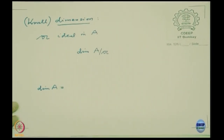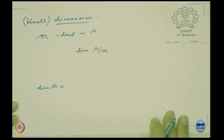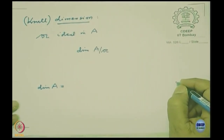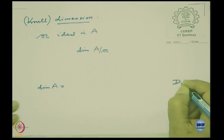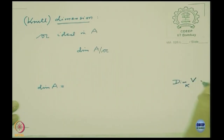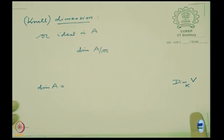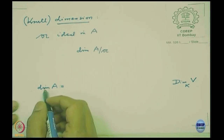For vector space dimension over a field K, I denote it by capital Dim with a subscript K, and it equals the cardinality of a basis. So dim (small d) is for Krull dimension, and Dim (capital D) is for vector space dimension.